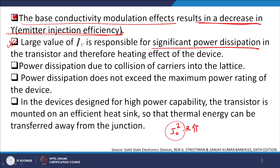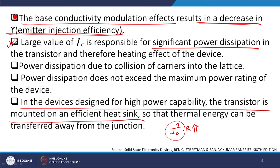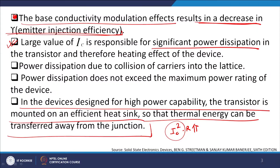In devices designed for high power applications, the transistor is mounted on an efficient heat sink so that thermal energy can be transferred away from the junction. As long as you are able to shift the thermal energy away from the base-collector or base-emitter junction, there will be no rise in minority carriers due to temperature. A good heat sink helps remove power quickly away from the emitter-base junction.